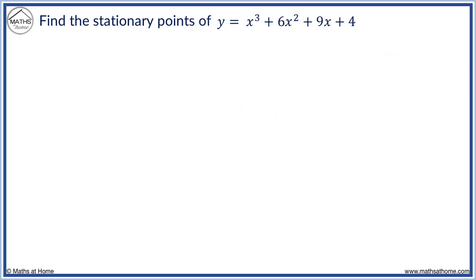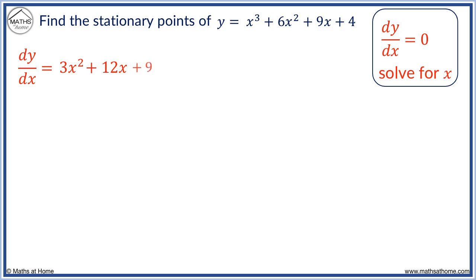Find the stationary points of y equals x cubed plus 6x squared plus 9x plus 4. We set dy by dx equals 0 and solve for x. dy by dx equals 3x squared plus 12x plus 9. We set dy by dx equals 0. We now solve for x.